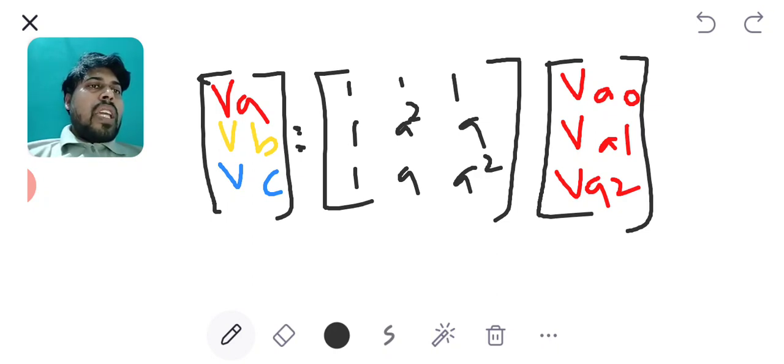If I multiply the two matrices which are present at the RHS side then I will get the expression as same as the previous one. So here this is the final expression for the unbalanced phase voltages VA VB VC in terms of symmetrical components VA0 VA1 VA2.